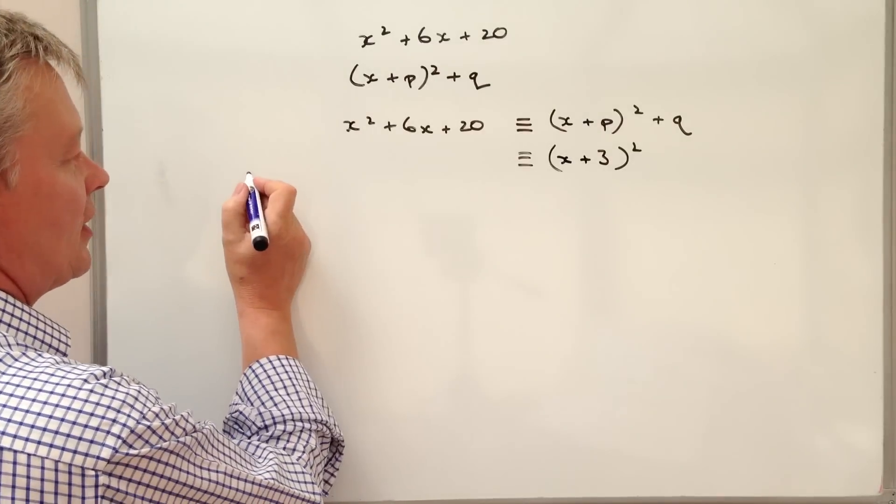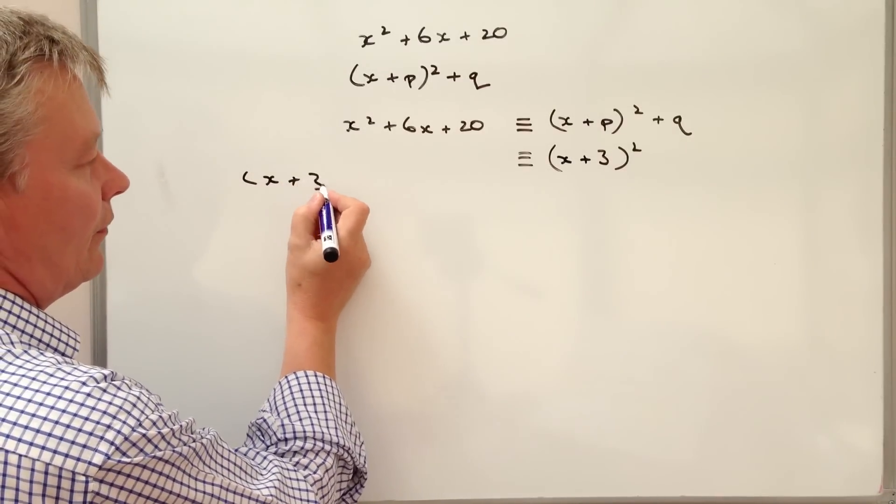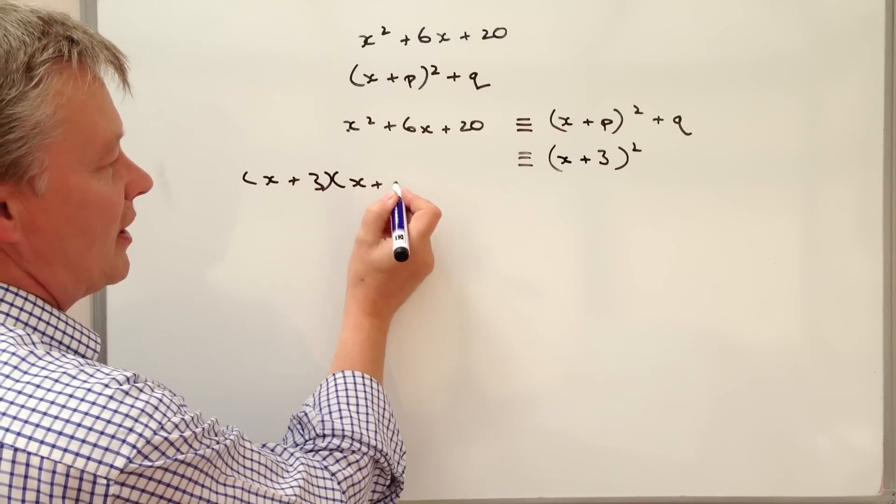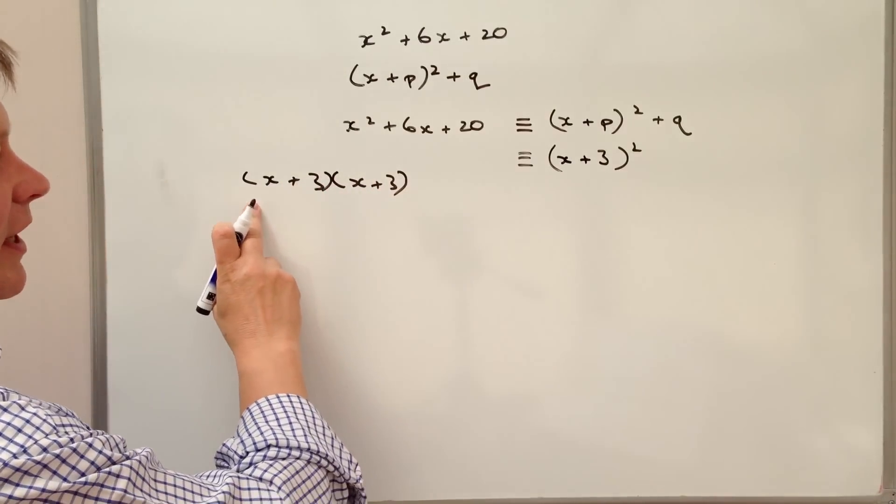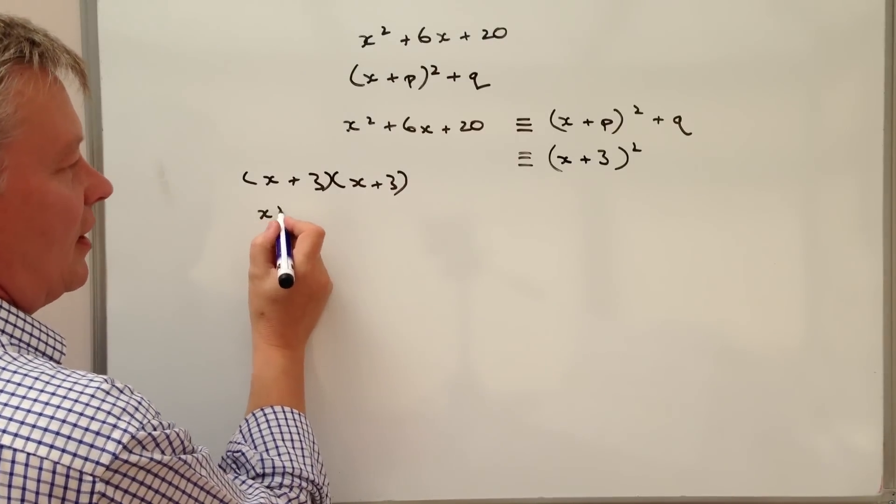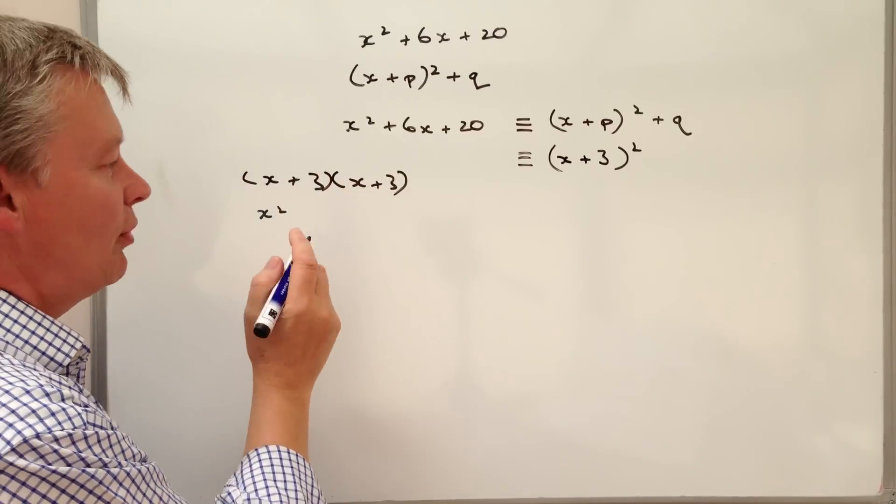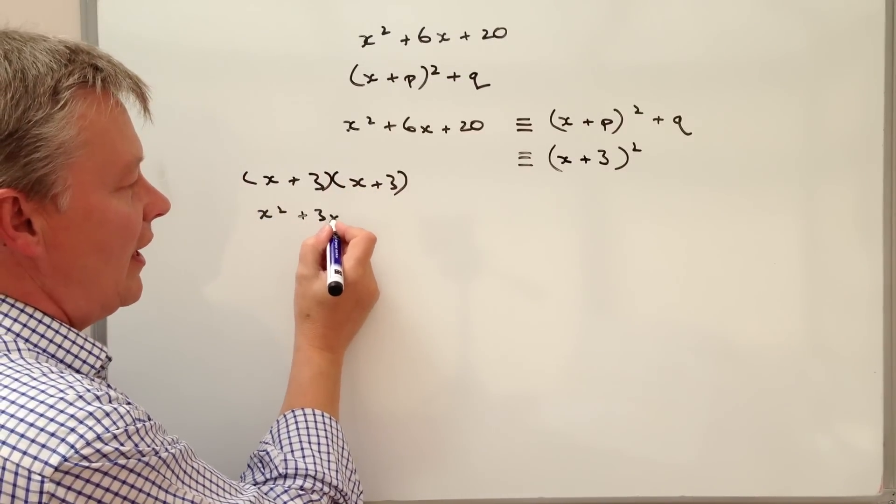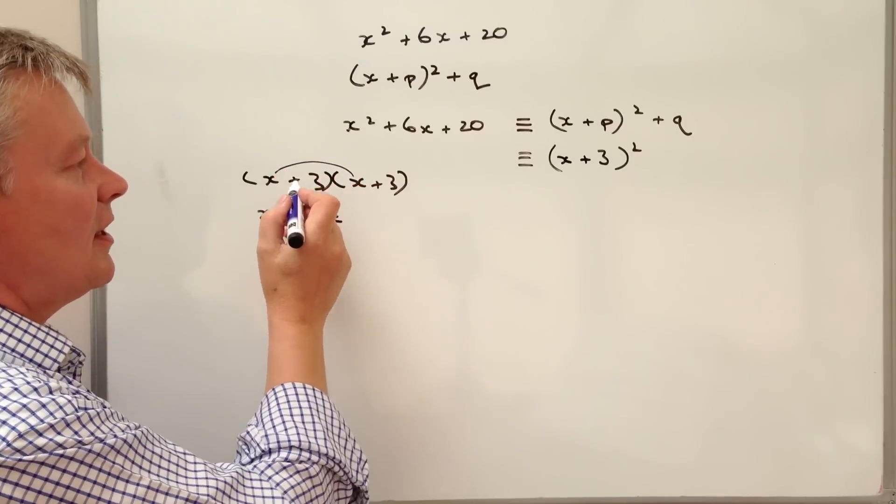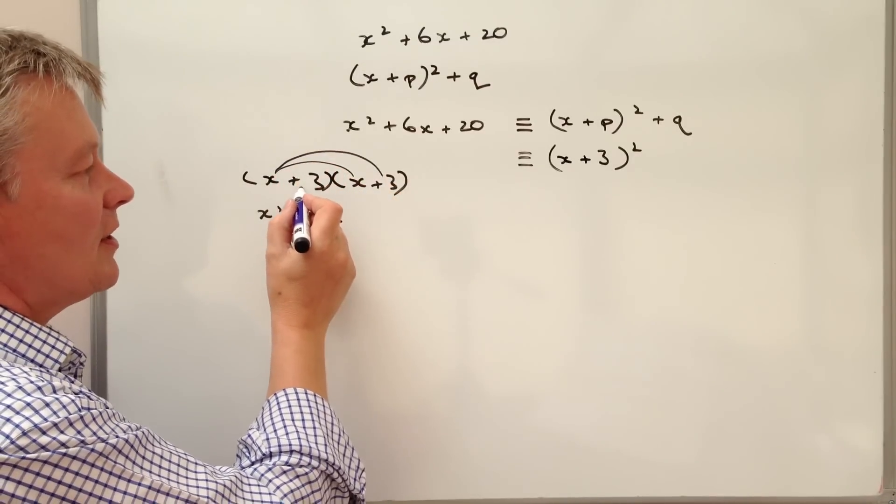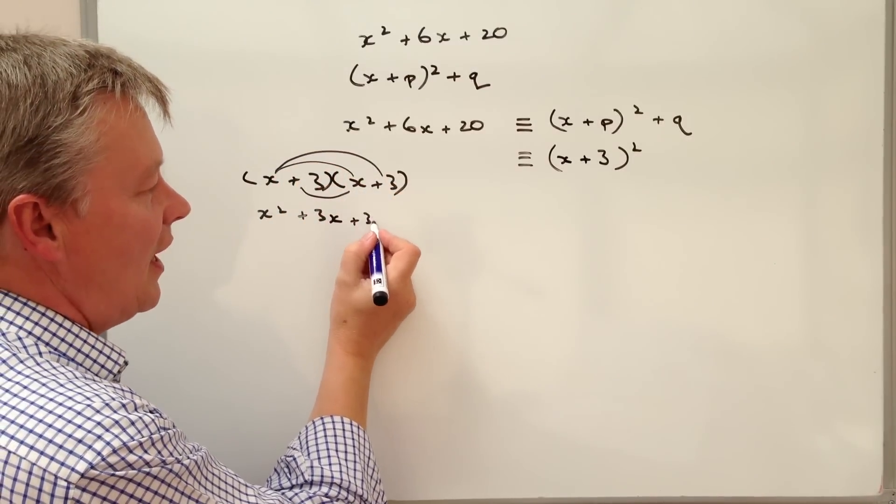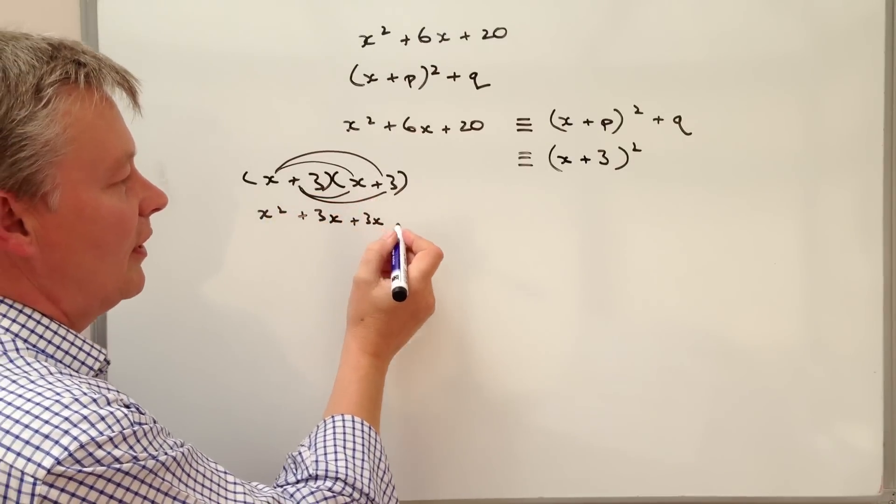So if I look at x plus 3 multiplied by x plus 3 then what I've got is x times x which is x squared. And then I've got plus 3 and then I've got plus 3 and then I've got plus 9.